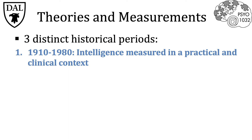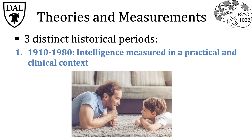This problem became addressed in the 1930s by David Wechsler, who distinguished between adults and children as having fundamentally different cognitive abilities. He devised respective intelligence tests for children and adults, allowing for the negation of chronological age in scoring altogether. David Wechsler devised two tests: the Wechsler Adult Intelligence Scales and the Wechsler Intelligence Scale for Children.